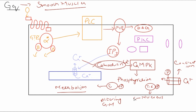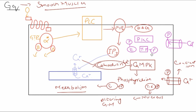Protein kinase C will also start phosphorylation of different enzymes, different transcriptional factors, and different ion channels. These ion channels bring calcium into the cell. They alter the genetic machinery and alter the metabolism of the cell. So in this way our GQ protein-coupled receptors are acting.